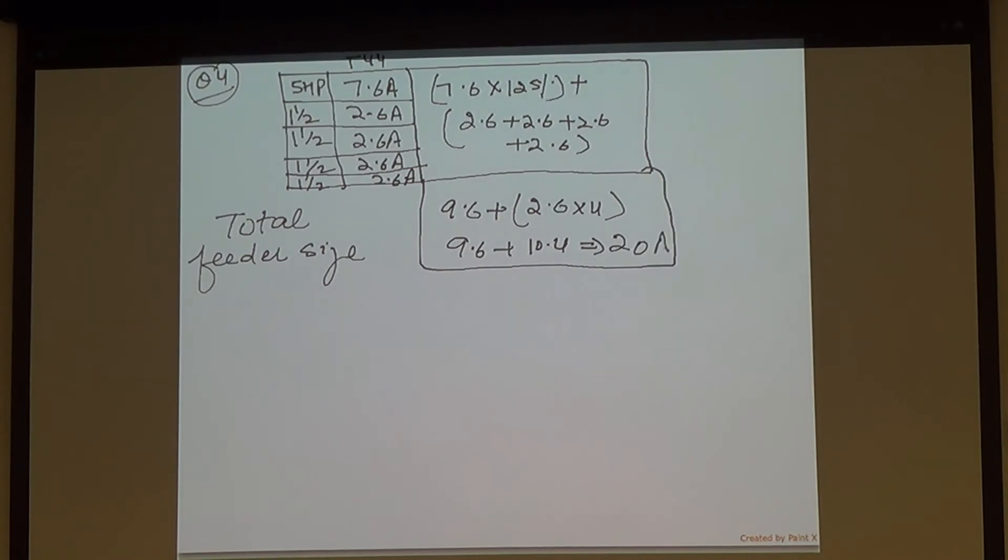Is it 19.9 or 20 guys? Did you do any math wrong? 7.6 times 1.25 is 9.5. That's when you get 19.9. All right guys, done.